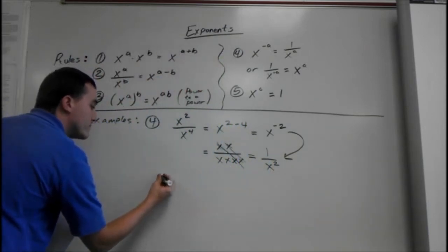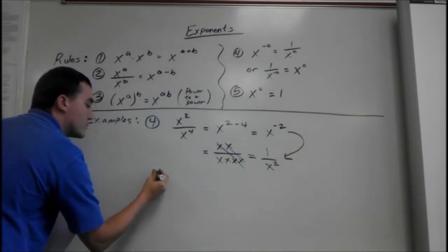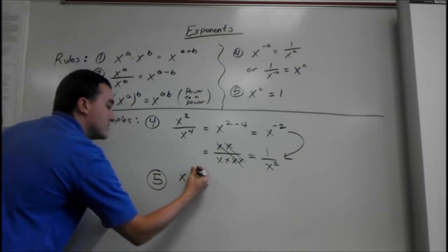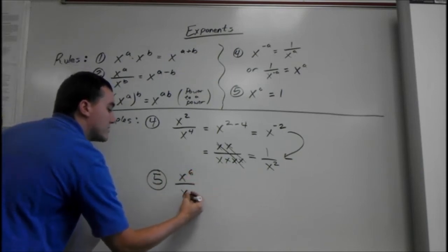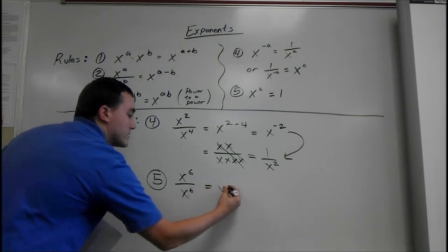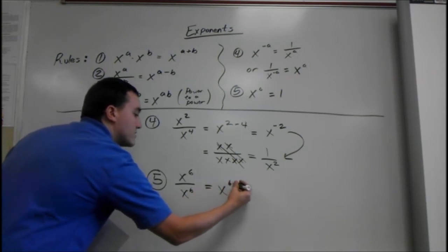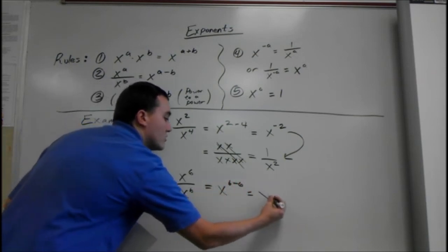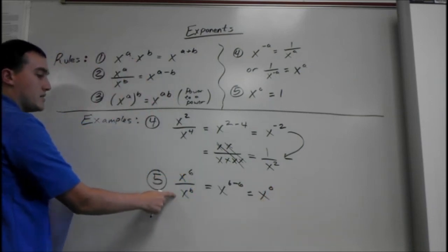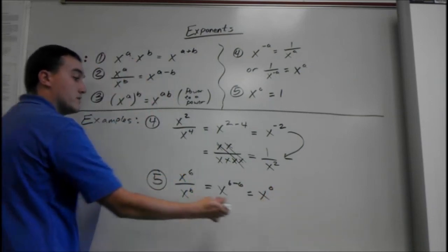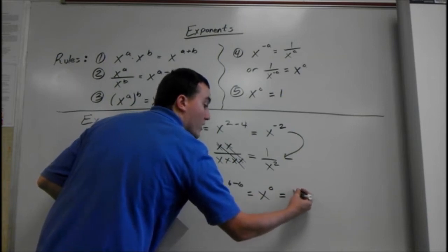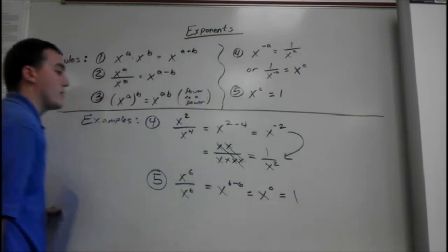One more, just for explaining the rules. Say we have x to the sixth over x to the sixth. We know x to the sixth minus sixth gives us x to the zero. But we also know anything divided by itself is one. So that's why anything to the zero power is one.